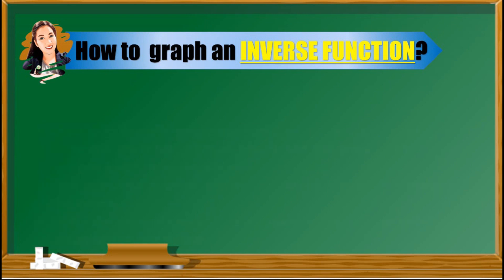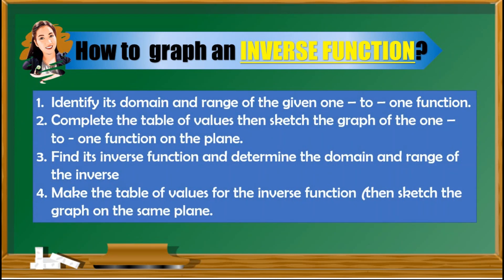So how do we graph an inverse function? Graphing an inverse function is just similar to graphing any function. Here are the steps. First, identify the domain and range of the given one-to-one function. Second, complete the table of values, then sketch the graph of the one-to-one function on the Cartesian coordinate plane. Third, find the inverse function and determine its domain and range by using the domain and range of the one-to-one. Fourth, make the table of values for the inverse function by simply interchanging the x and f(x) values, then sketch the graph on the same plane.